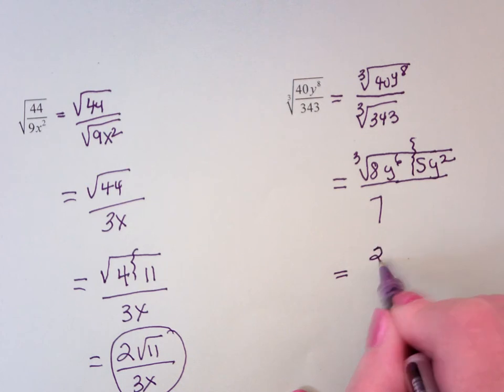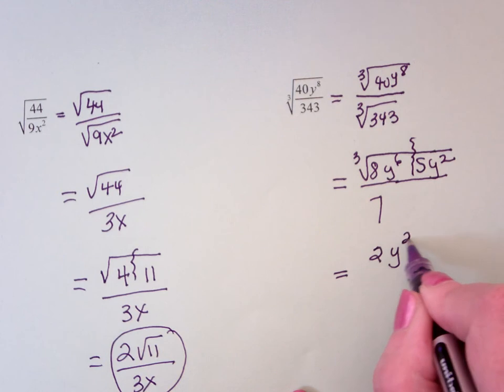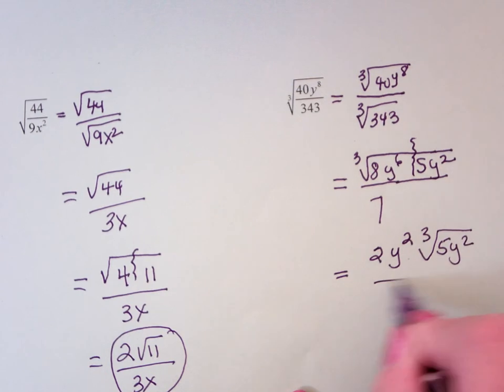2. Cube root of y to the 6th is y to the? 2, right? And then cube root of the leftover. And that's all over 7.